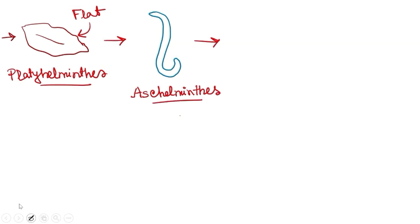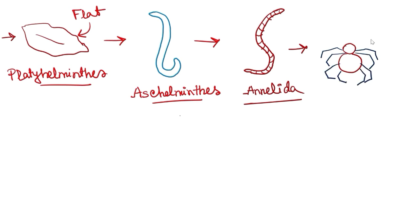The sixth phylum is Annelida. Annel means rings, so these animals have rings in their body. That's why they are called Annelida. The seventh phylum after Annelida is Arthropoda. Arthropoda means jointed appendages, so these animals have jointed legs. That's why they are called Arthropods.